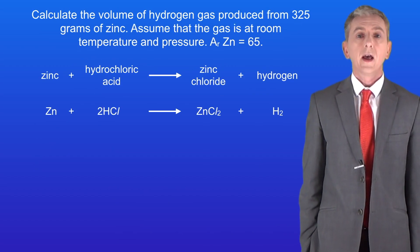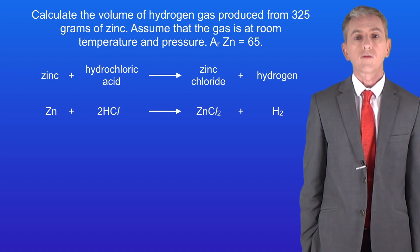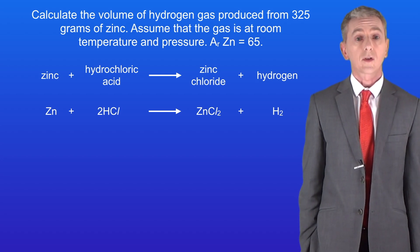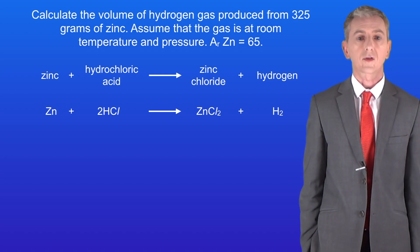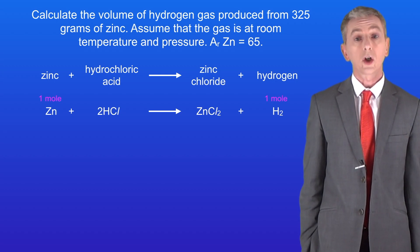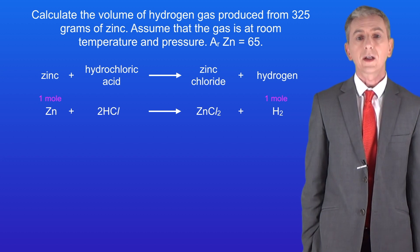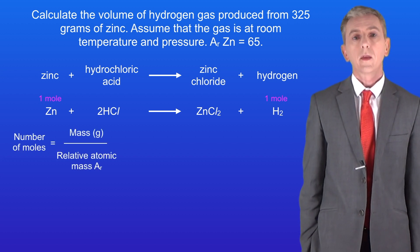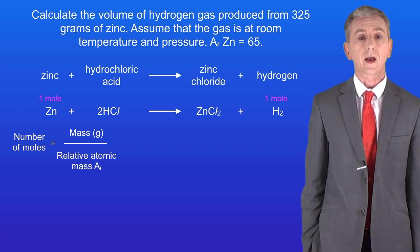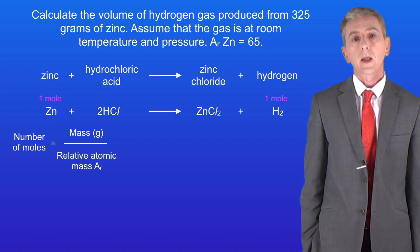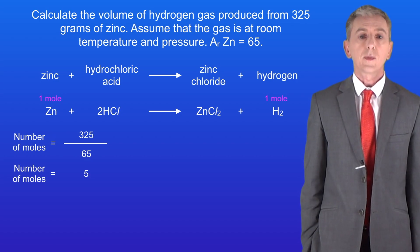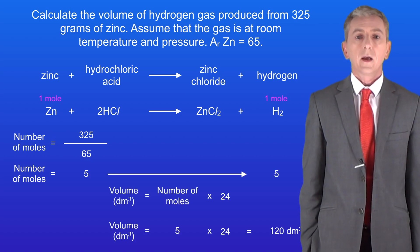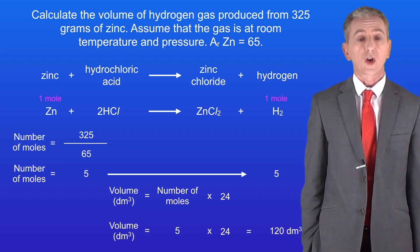Here's a question for you to try: calculate the volume of hydrogen gas produced from 325 grams of zinc. Assume that the gas is at room temperature and pressure. The relative atomic mass of zinc is 65. Pause the video and try this yourself. From the equation we can see that one mole of zinc produces one mole of hydrogen. The number of moles is the mass divided by the relative atomic mass — remember that zinc is an element. So 325 divided by 65 tells us that we've got five moles of zinc, which means we can produce five moles of hydrogen. Multiplying by 24 gives us a final answer of 120 decimetres cubed.